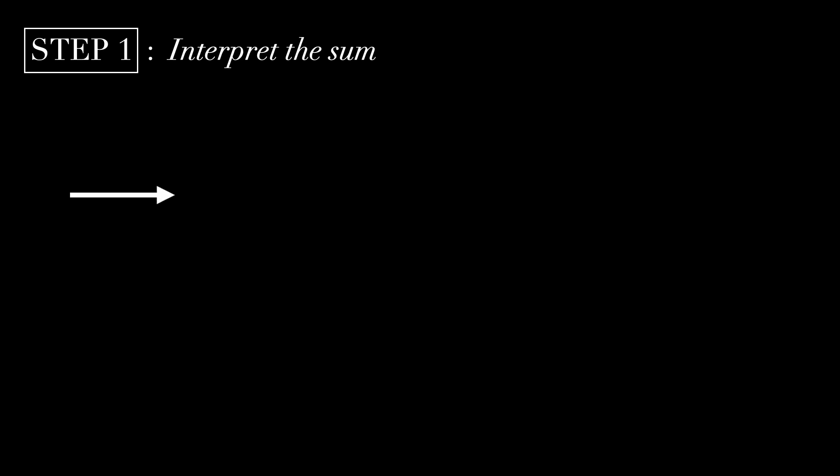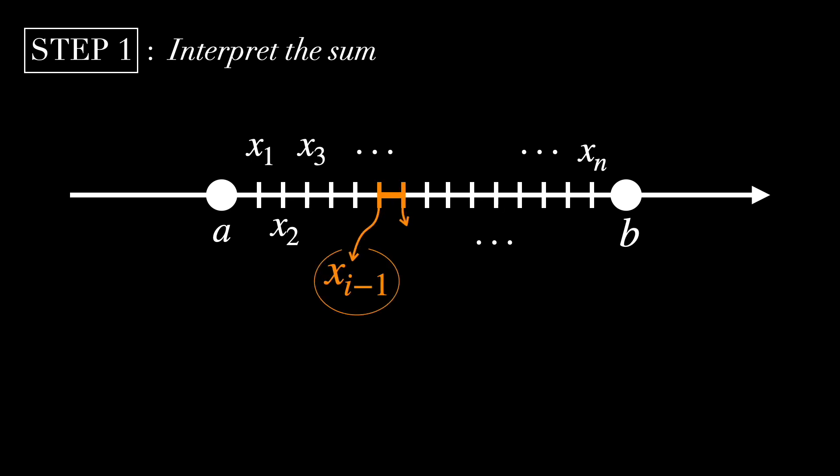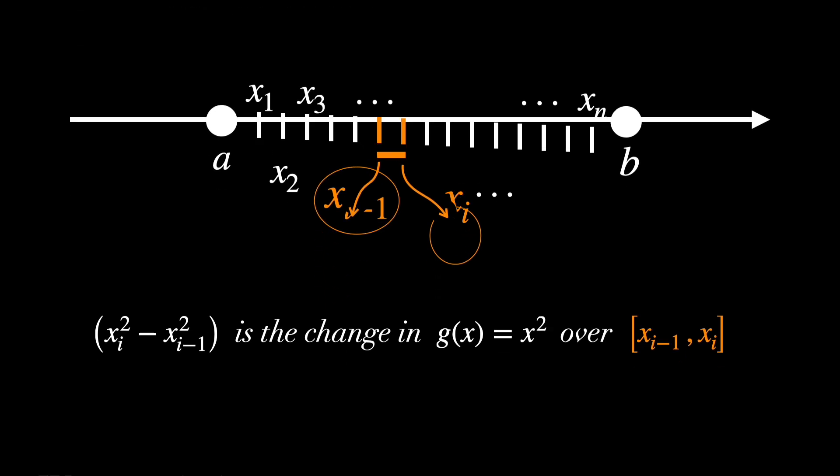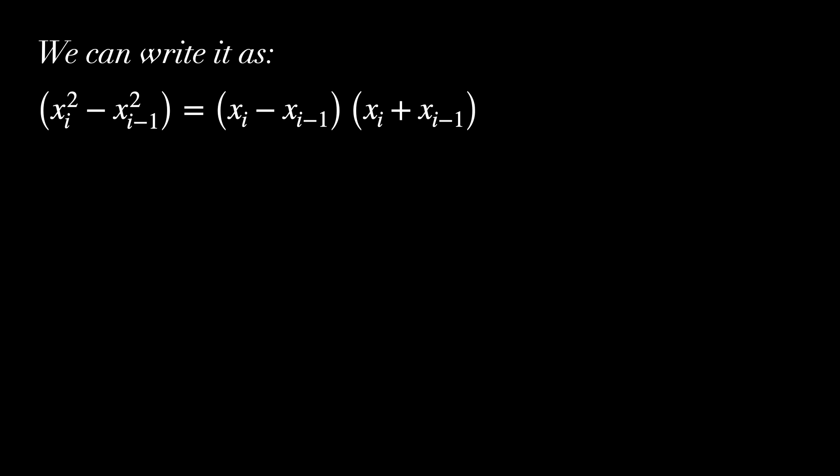Step 1 is to interpret the sum. In the Riemann-Stieltjes sum, ξᵢ is a sample point in the subinterval [xᵢ₋₁, xᵢ]. xᵢ² - xᵢ₋₁² is the change in g(x) = x² over the subinterval [xᵢ₋₁, xᵢ]. We can write it as this product. So now, the sum becomes the following.